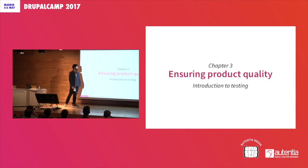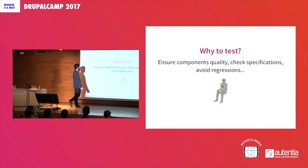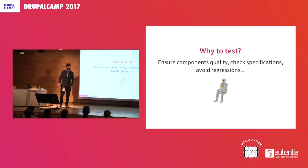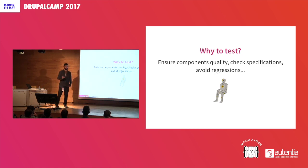How can we ensure product quality? How can we be sure that we are doing things right with tests? Why test? Of course, to ensure component quality, to meet specifications, and also to avoid regressions. For example, you are working in an agile process by sprints, and in the second or third sprint you break a previous release — that's not good. You need to check that. This is why tests are really, really important.